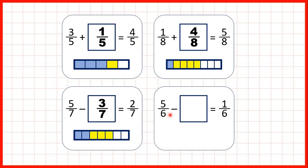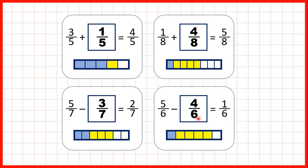Finally, 5/6 minus what is equal to 1/6? We can show 5/6 as 5 parts out of 6, and we know that something has been subtracted to leave us with just 1/6 — that's the 1/6 now shaded blue. We can see that 4/6 of our fraction bar is now yellow, and that's the 4/6 that's been taken away. Again, because it's the second number in our subtraction problem that's missing, we can use subtraction to find our answer: 4/6 is the same as 5/6 minus 1/6.